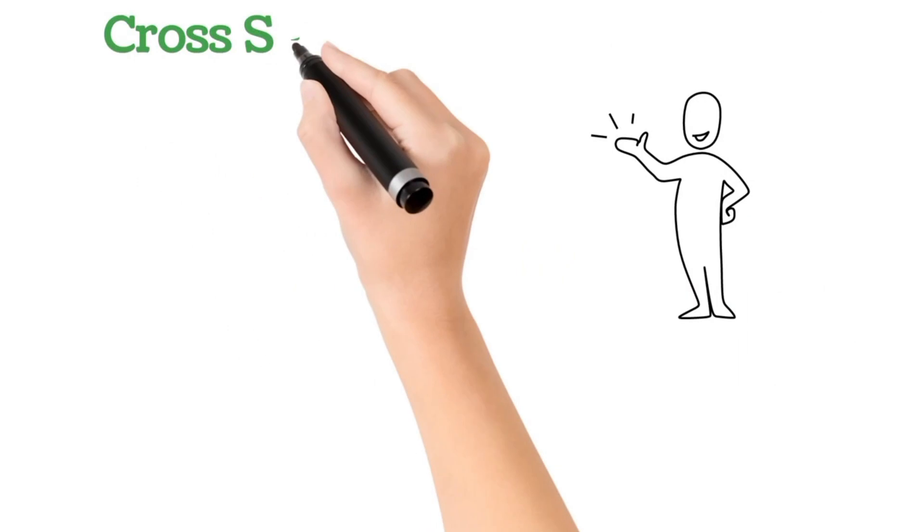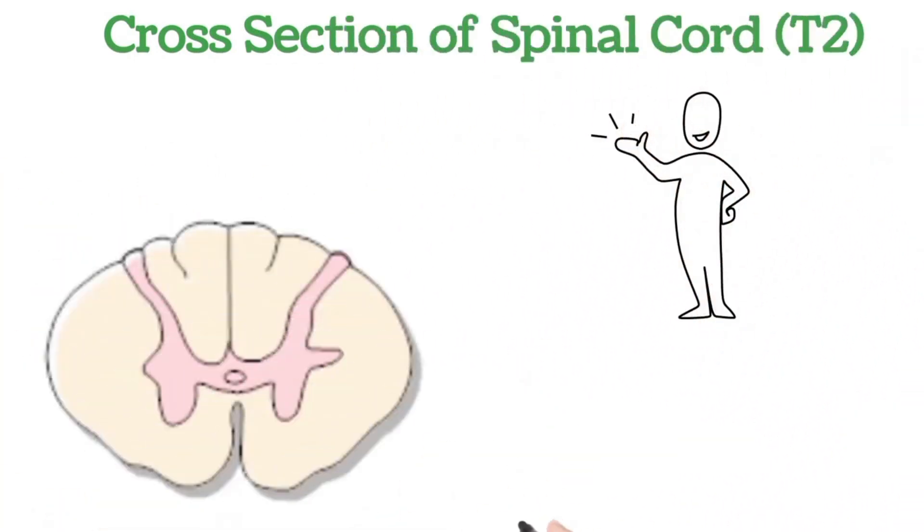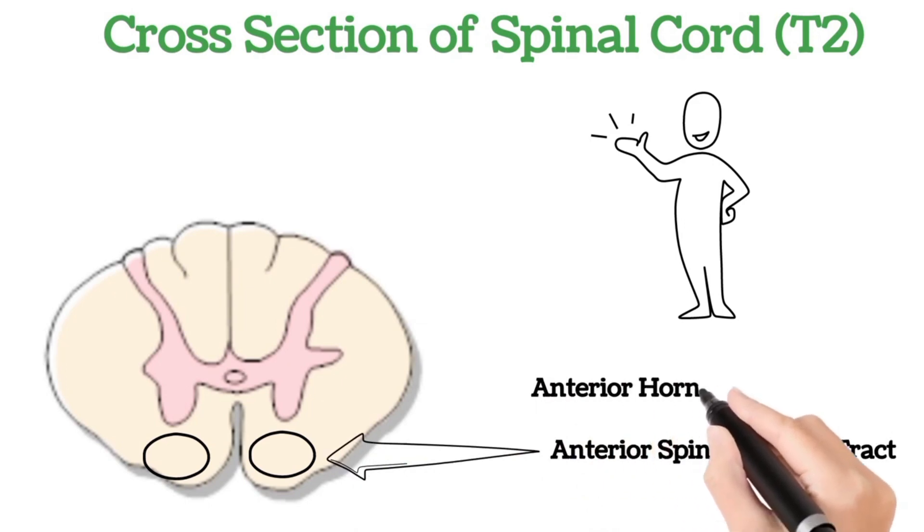This is the cross section of the spinal cord at the level of T2. The anterior spinothalamic tract is a group of nerve fibers located in the white matter anterior to the anterior horn. As the name suggests, these tracts move through spinal cord to thalamus. The anterior horn is the anterior portion of the H-shaped gray matter.